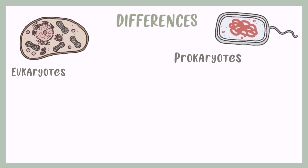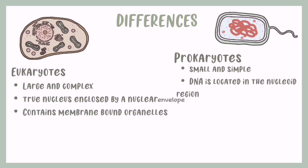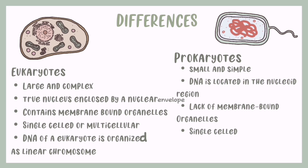And now the differences. While eukaryotes are large and complex, prokaryotes are small and simple. Eukaryotes have a true nucleus enclosed by a nuclear envelope, but prokaryotes have DNA located in the nucleoid region. Eukaryotes contain membrane-bound organelles, whereas prokaryotes lack membrane-bound organelles. Eukaryotes can be single-celled or multicellular, whereas prokaryotes can only be single-celled. The DNA of a eukaryote is organised as linear chromosomes, whereas the DNA of a prokaryote is a single chromosome.